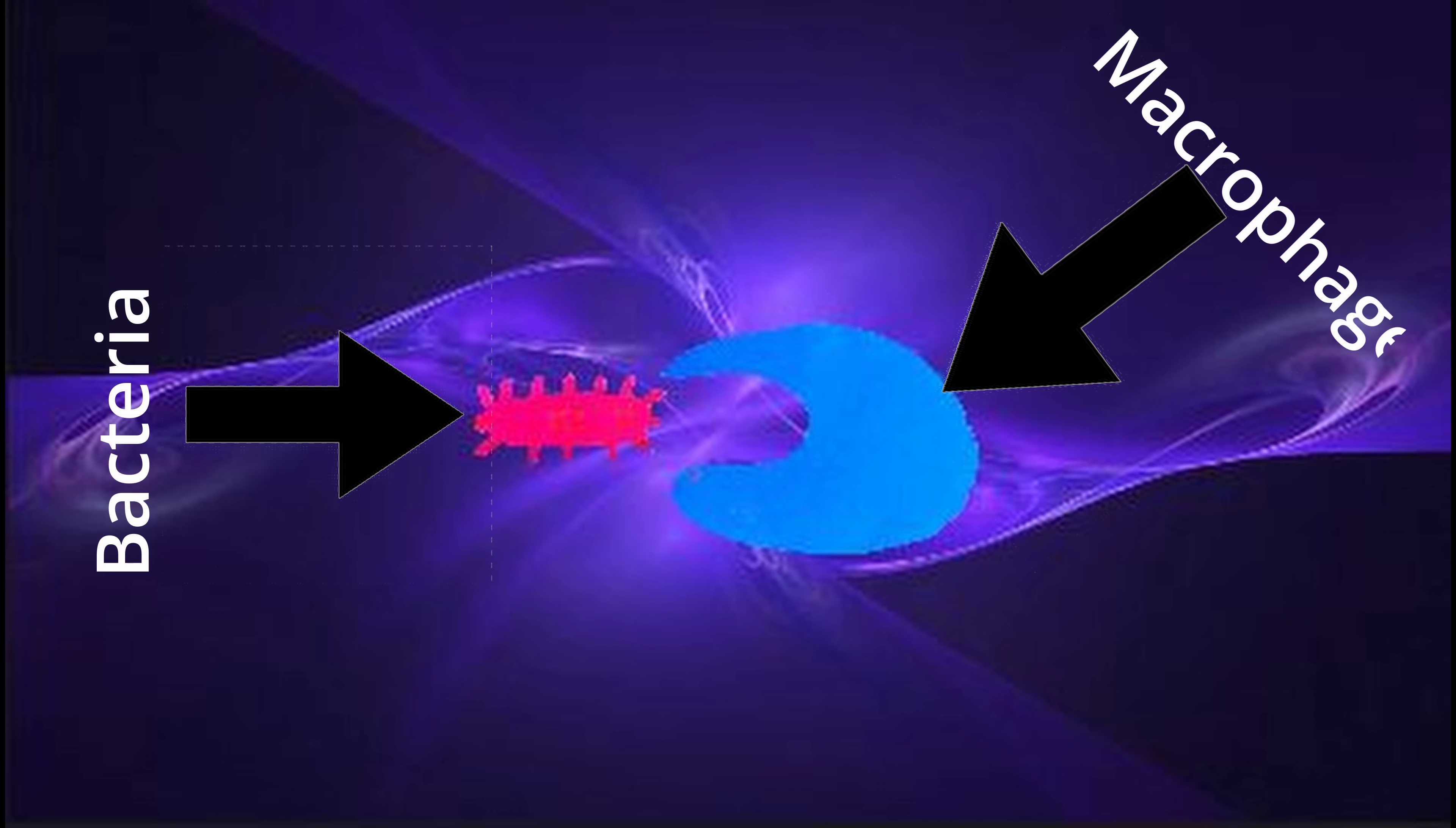The Humeral Response. Here we can see a bacterium and a macrophage. The humeral response begins when a pathogen invades the body, releasing chemicals that attract macrophages.